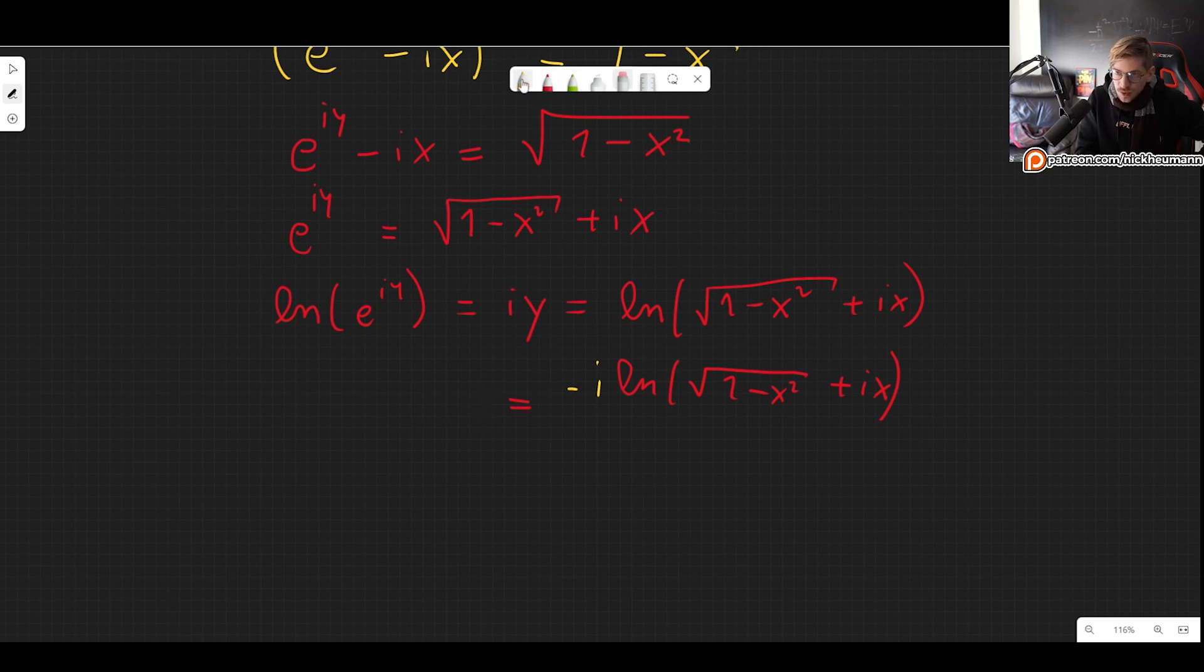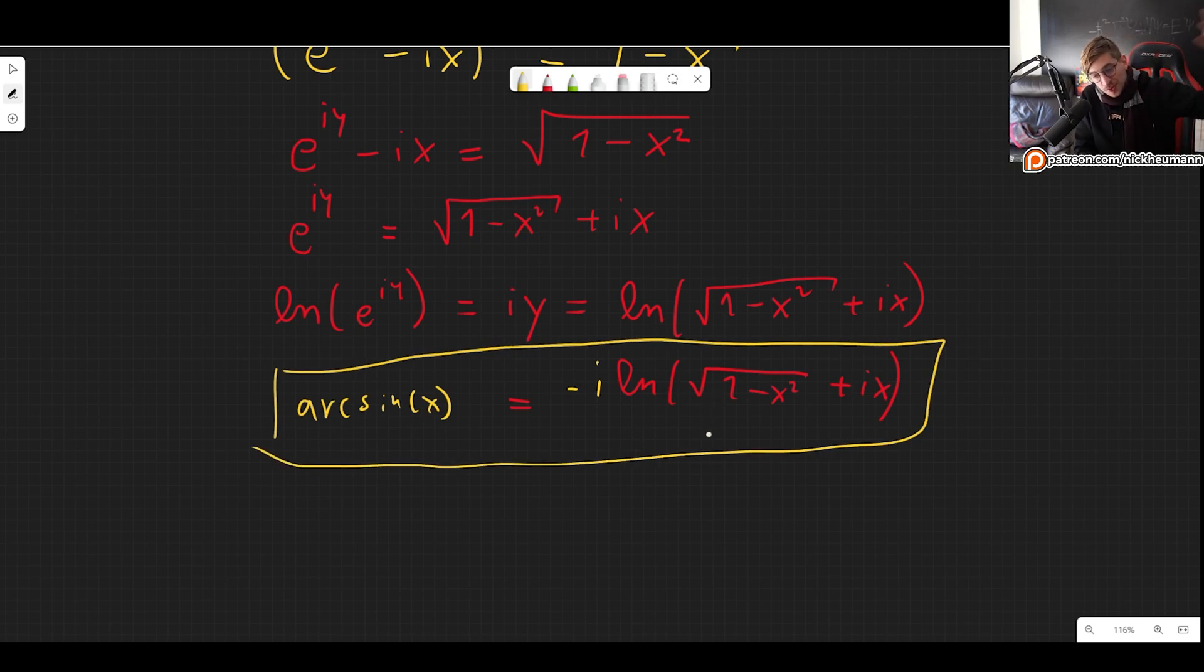So let's rewrite this. And we get that the arc sine of x is equal to minus i times the natural log of the square root of 1 minus x squared plus ix.